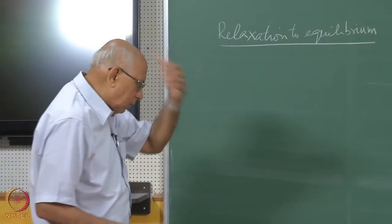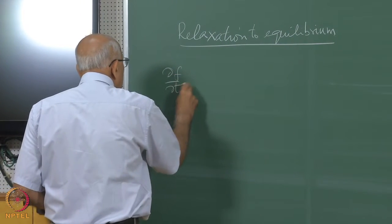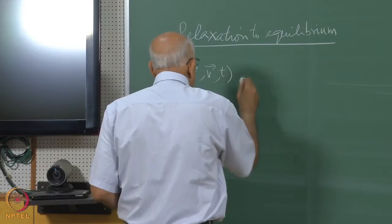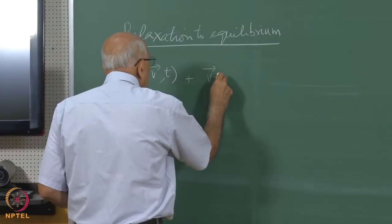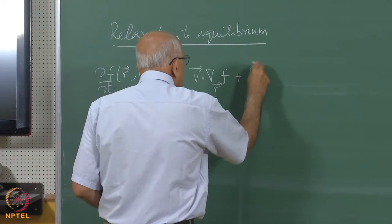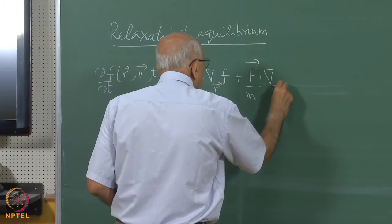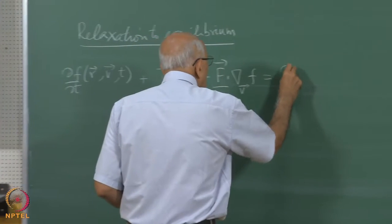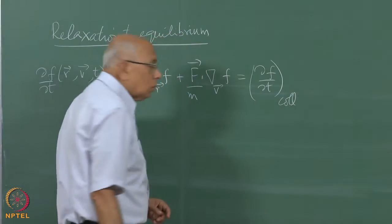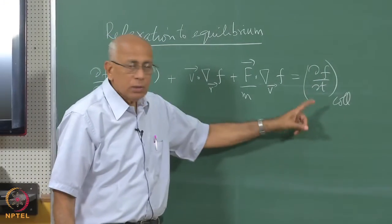Let us write the Boltzmann equation down just to refresh your memory. It is: delta F over delta T — which is in general a function of R, V, and T — plus V dot del with respect to R of F, plus if there is an external force, F over M dot gradient with respect to V of F, and that is equal to the collision integral delta F over delta T collision. All the physics is contained in the collision term; the rest is basically kinematics.